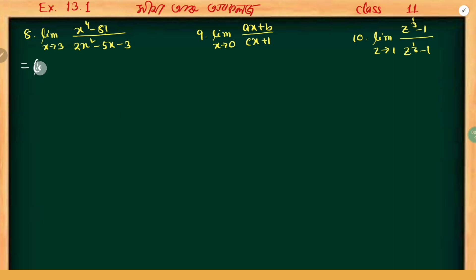divided by 2x squared minus 5x minus 3. When I substitute 3 directly: 2 into 9 minus 15 minus 3, we get 18 minus 18 which equals 0. In the numerator we also get 0. So we get 0 by 0 form. When we get 0 by 0 form, we need to apply a different method.